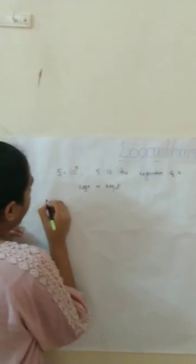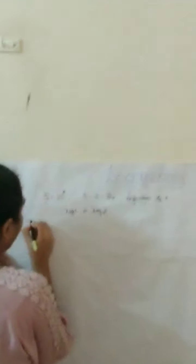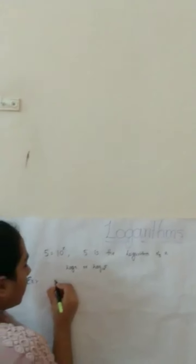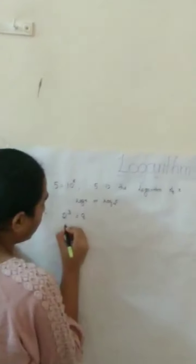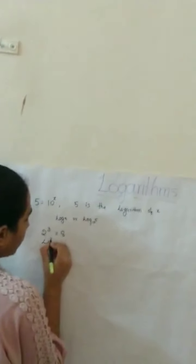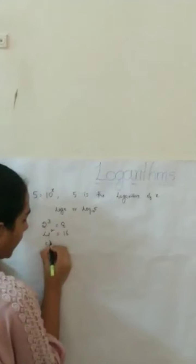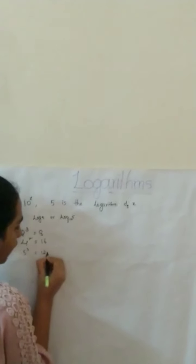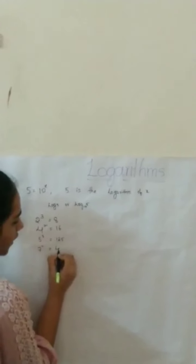Now, let's see the examples. 2 cube equals 8, 4 square equals 16, 5 cube equals 125, 7 square equals 49. This is in the form of exponential.